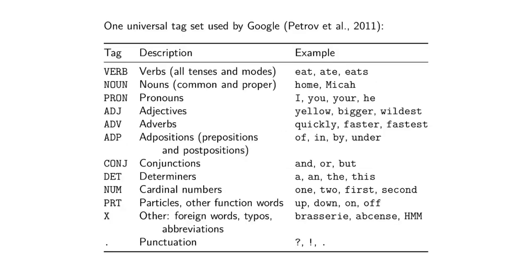There are different ways in which you can tag parts of speech categories, so you need to decide on a specific convention — a specific tag set — that you're going to use. It depends a little bit on the application what type of tag set you will use. This is a tag set from Google; you can go and read the paper where they tried to capture a lot of languages and basically the syntactic categories for several different languages using this specific tag set.